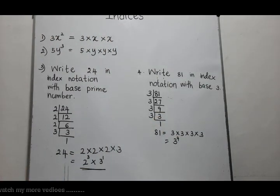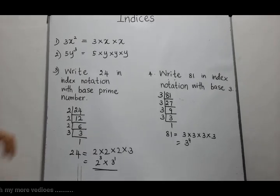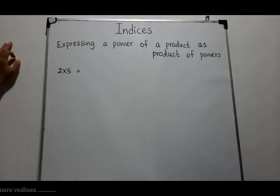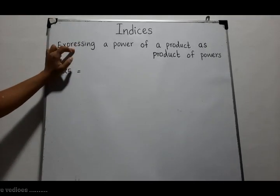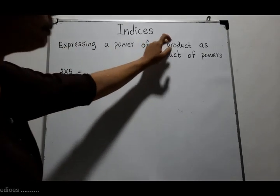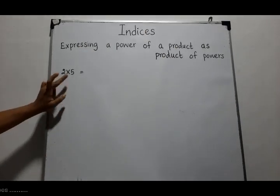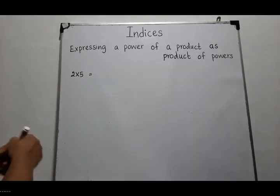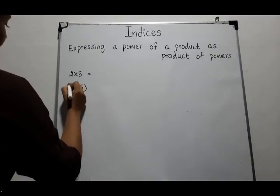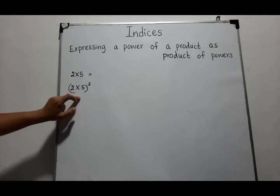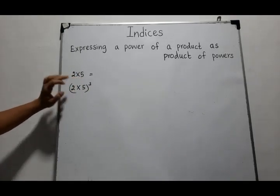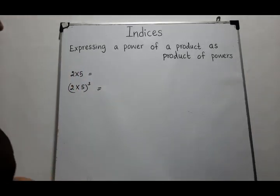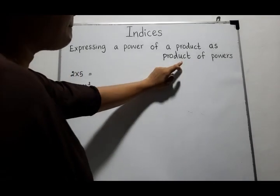I think you have recalled your knowledge about indices from grade 7. In grade 8, you have to learn how to express a given power of a product as a product of powers. Here, look at 2 into 5 — that is the product of 2 and 5. We want to expand 2 into 5 to the power 3, which is the third power of the product of 2 and 5, and write it as a product of powers.